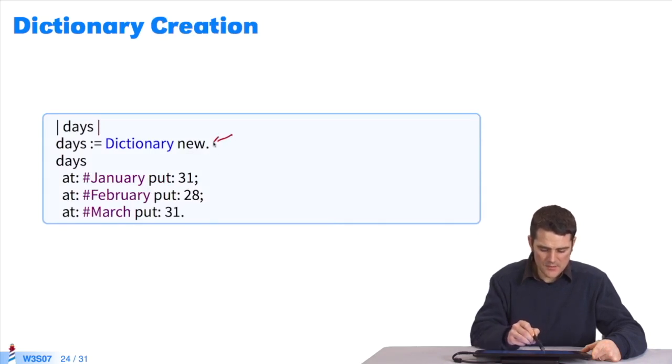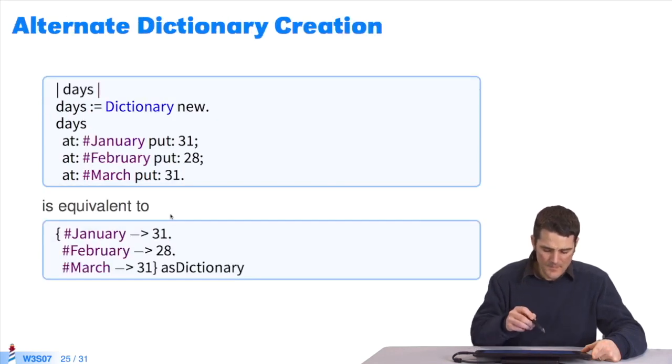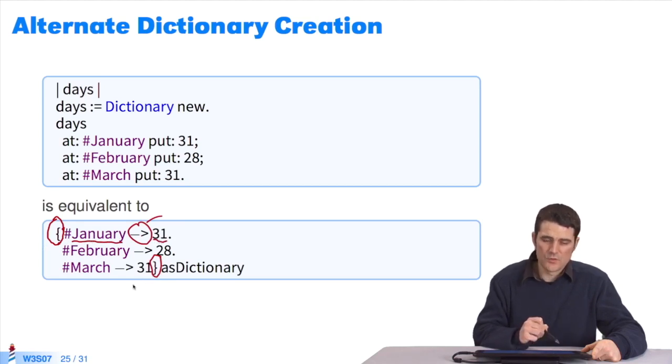For instance, I create an instance of the class Dictionary. Picture the dictionary as an array. To the key January, I associate 31. To the key February, 28. To the key March, 31. It's equivalent to a dynamic collection. You create a dynamic collection using braces. Open brace and close brace. You use arrows to create associations. This is a symbol. To the symbol January, I associate the number 31. I have a collection of associations. I turn into a dictionary with AS:DICTIONARY. These two ways of creating a dictionary are equivalent.